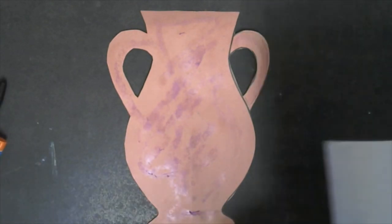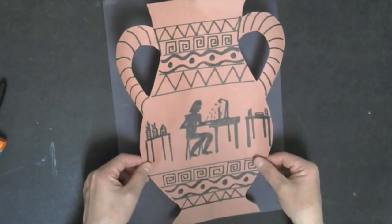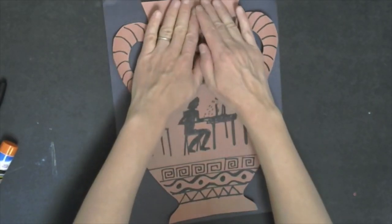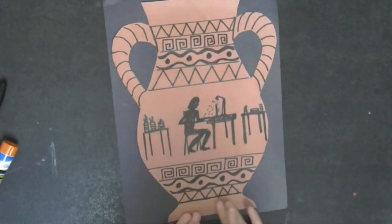Then you are going to take your black piece of paper and you are going to line it up. Make sure that it is centered. And then place it down and give it a good rub so that it stays down and it is flat.